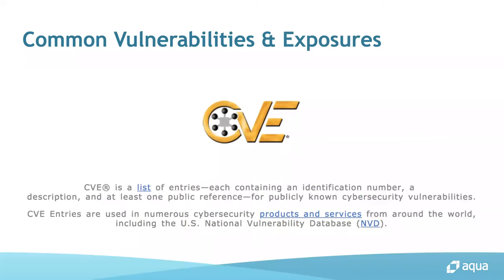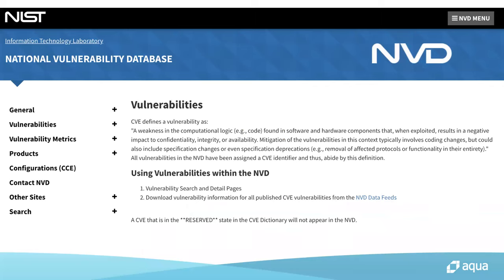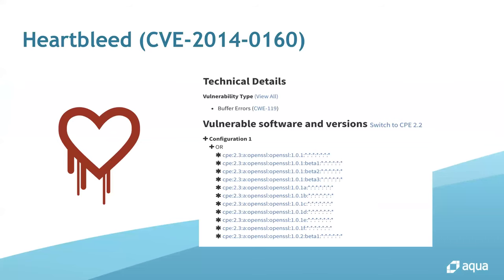The most famous vulnerability identifier is the CVE ID, which is managed and assigned by MITRE. NVD, the National Vulnerability Database, lists all vulnerabilities assigned a CVE ID. If you want to know details about a vulnerability, you can visit NVD and search by CVE ID. For example, Heartbleed affects OpenSSL and is assigned CVE-2014-0160.